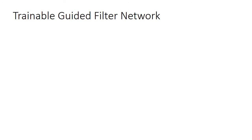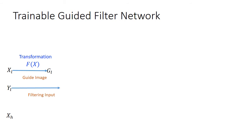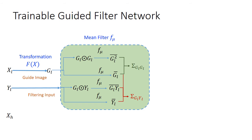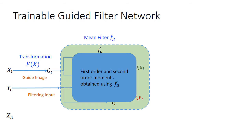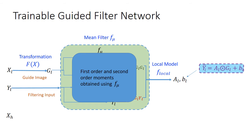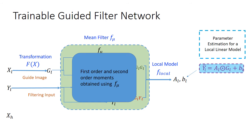Our trainable guided filter network is inspired by Wu and others. It transforms the low resolution input XL into a guidance map GL using the transformation F. The output of LRNet is fed as filtering input while GL serves as a guide image. We first use a filter Fμ to calculate first order moments YL bar and GL bar, as well as the second order moments of GL and YL. These are then used to obtain coefficients AL and BL, which form the parameters of a local linear model given by YL bar equals AL times GL plus BL. The coefficients are estimated per pixel, so the grid of coefficients AL has the same size as the filtering input YL.